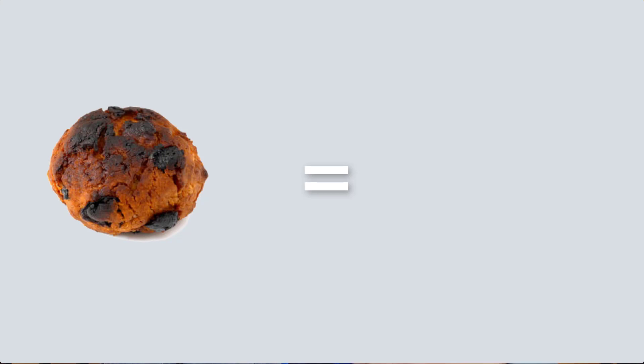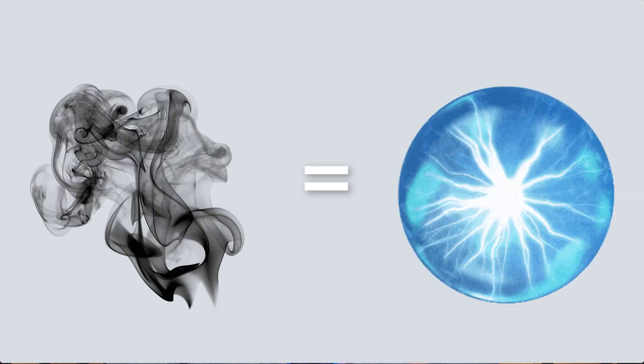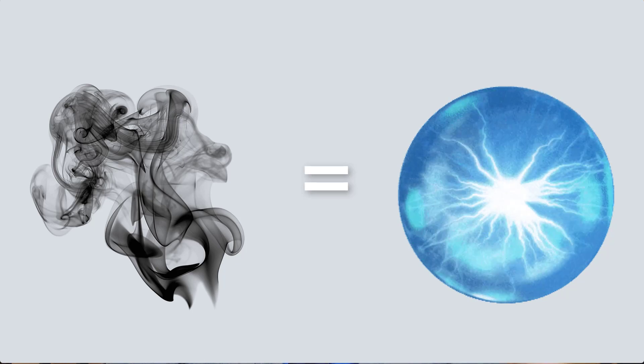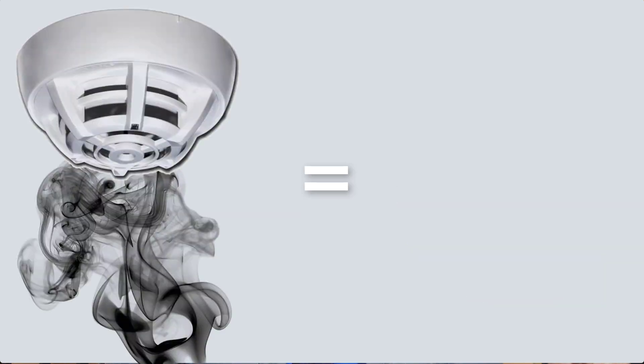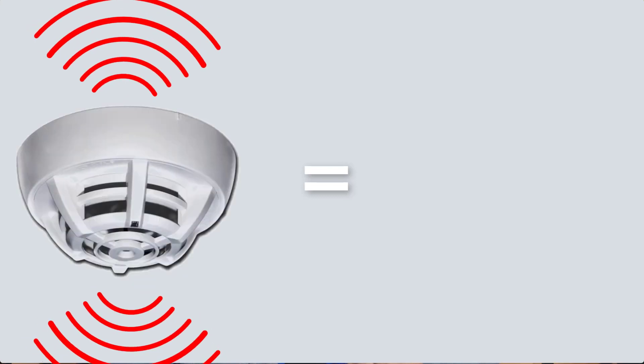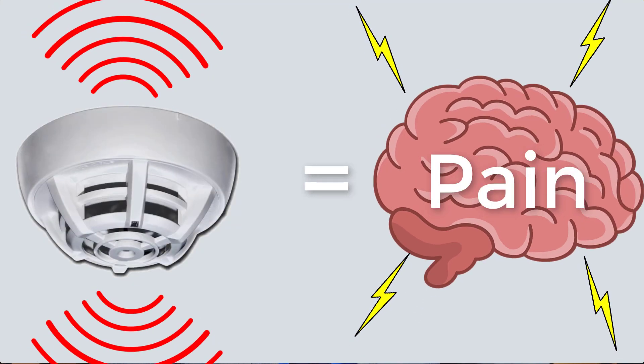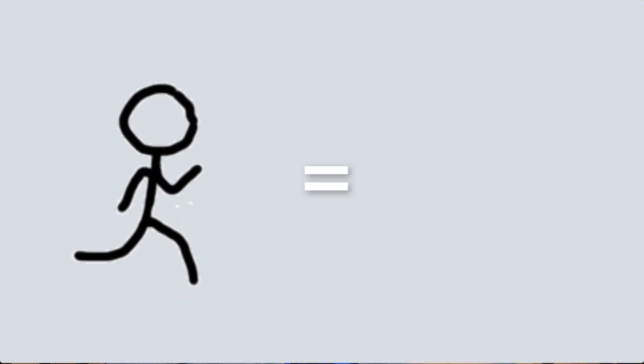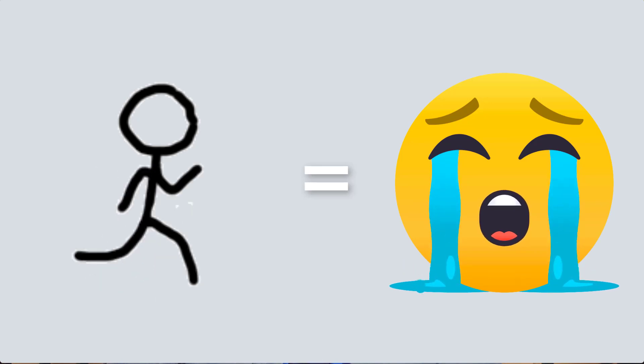After your brain decides that this is an injury, it sends electrical signals down to the rest of your body to actually do something about it. Now, going back to the smoke alarm example: the burnt cookies are like the injury in your body, the smoke from the cookies is like the little electric signals from your nociceptors, the smoke alarm detecting the smoke is like your brain detecting the electric signals, the smoke alarm going off is like your brain creating pain, and you running to the kitchen to put out the fire after you hear the alarm is like you calling for help when you feel pain.